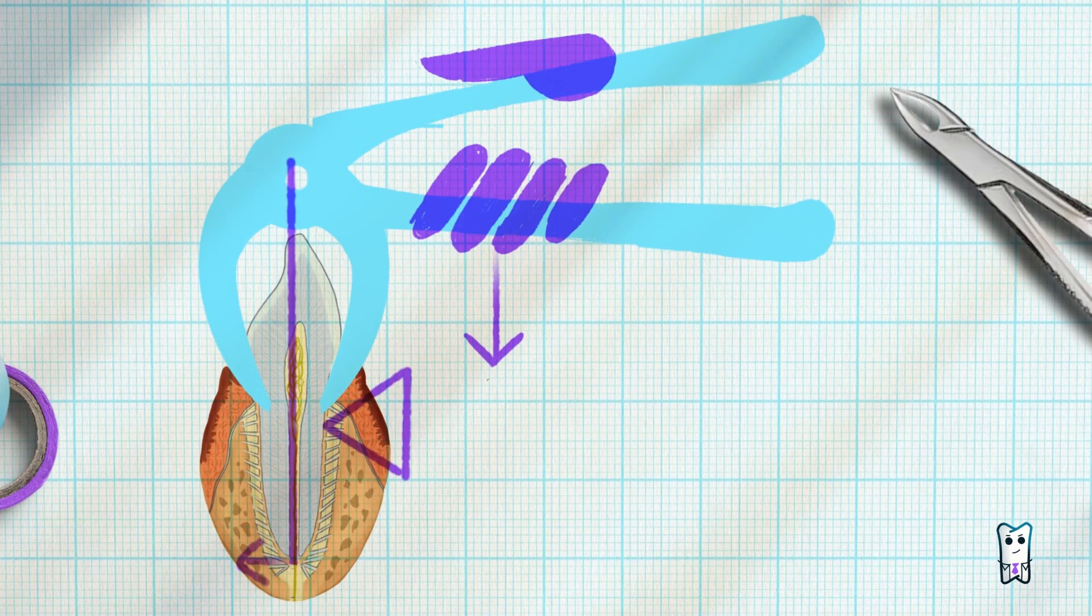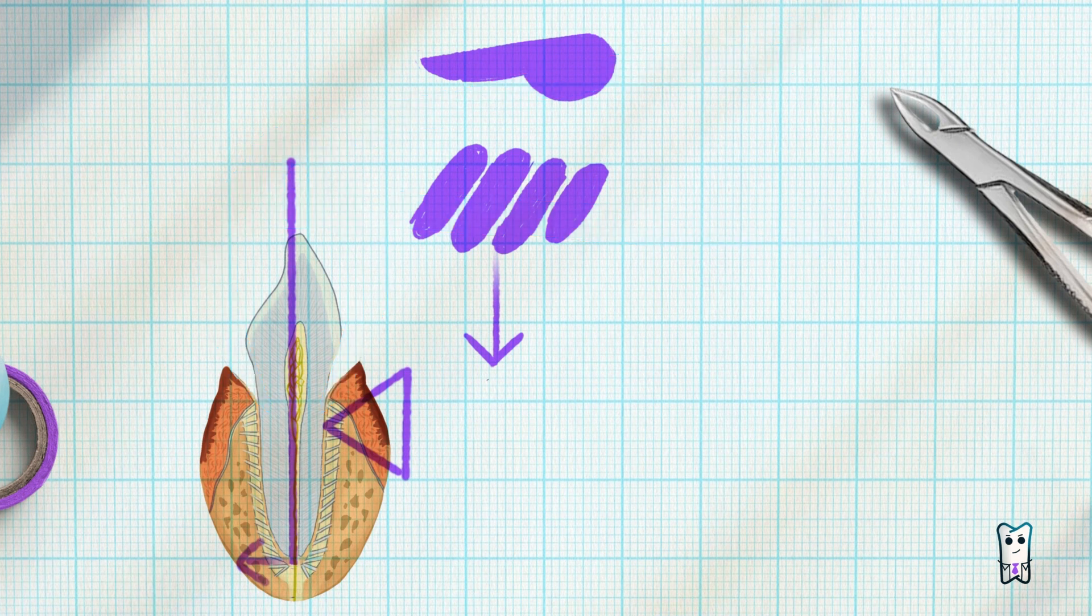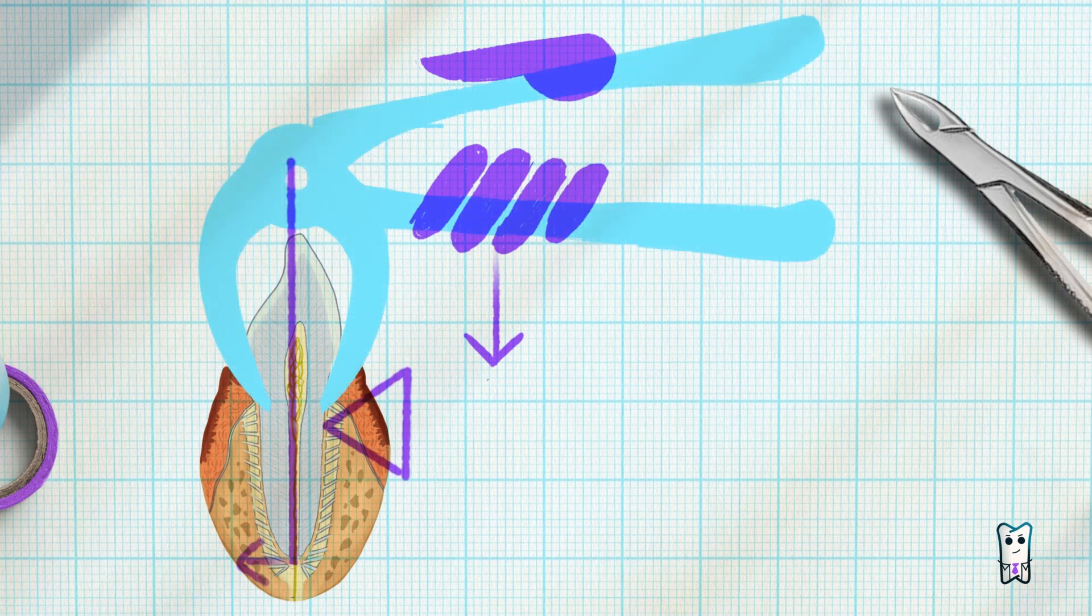If you think about it, the forceps with the tooth in its beaks creates a first class lever, which is at an angle. The long arm is the forceps with part of the tooth, the fulcrum is the bone, and the short arm is part of the root.